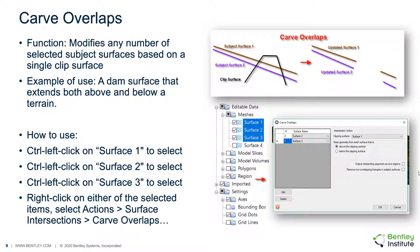A similar function is the Carve Overlap function, which is similar to Build Up or Down except that the clipping surface is used to cut out sections of the surfaces. Any number of surfaces can be selected and carved based on the clipping surface. To utilize the function, the user selects any number of surfaces, then right-clicks and selects Actions, Surface Intersections, Carve Overlaps, and the dialog will be presented where the user can select the clipping surface.